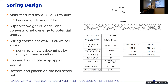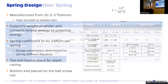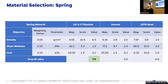For material selection of the spring, we evaluated three materials across three parameters: density, shear modulus, and cost. Density was the most important factor, as we wanted to reduce weight as much as possible, since adding mass increases the required spring coefficient. Based on this selection matrix, the best material was 10-2-3 titanium, which is why we selected it.